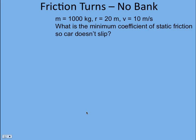Take a look at a problem where we have a car taking a turn and the road surface is horizontal — in other words, the road is not banked. The car has a mass of 1,000 kilograms, the turn has a radius of 20 meters, and the car is going 10 meters per second. How much friction do we need?